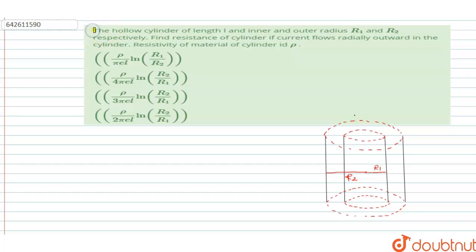Hello, welcome to Doubtnet. In this question, given a hollow cylinder of length L and inner and outer radius R1 and R2 respectively, find the resistance of the cylinder if current flows radially outward in the cylinder. Resistivity of the material of the cylinder is rho.